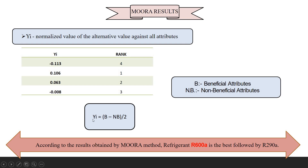According to the MOORA method, R600A is the best refrigerant, followed by R290, consistent with results from previous methods. These are the yi values and rankings for all refrigerants, with R600A achieving the first rank.